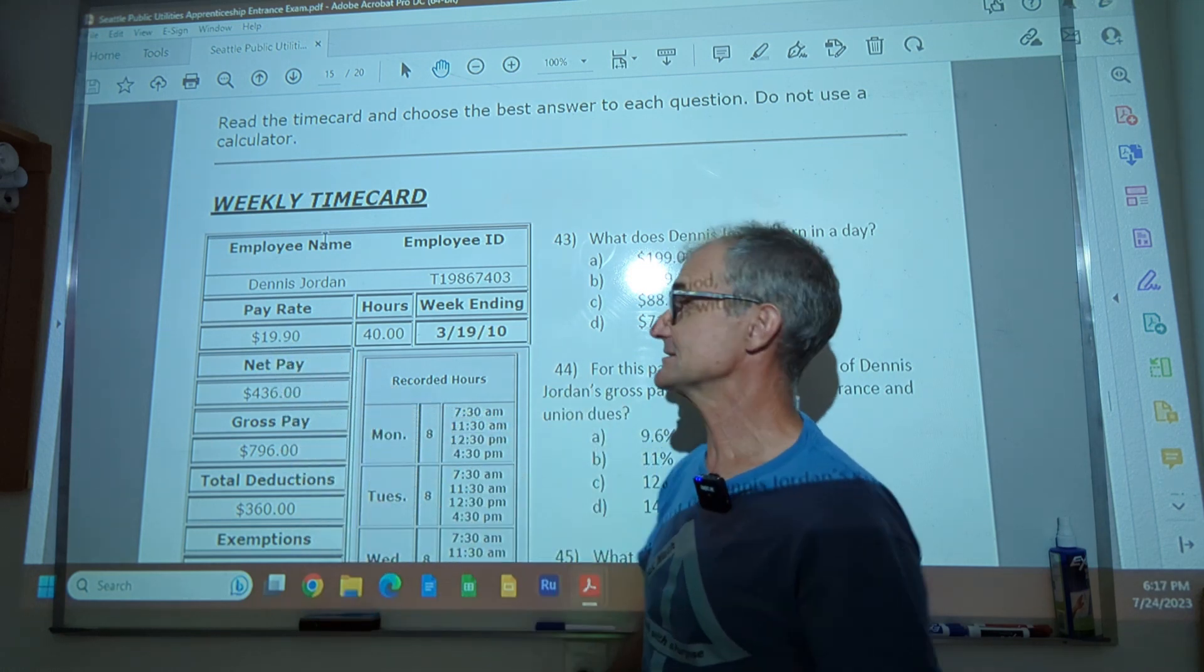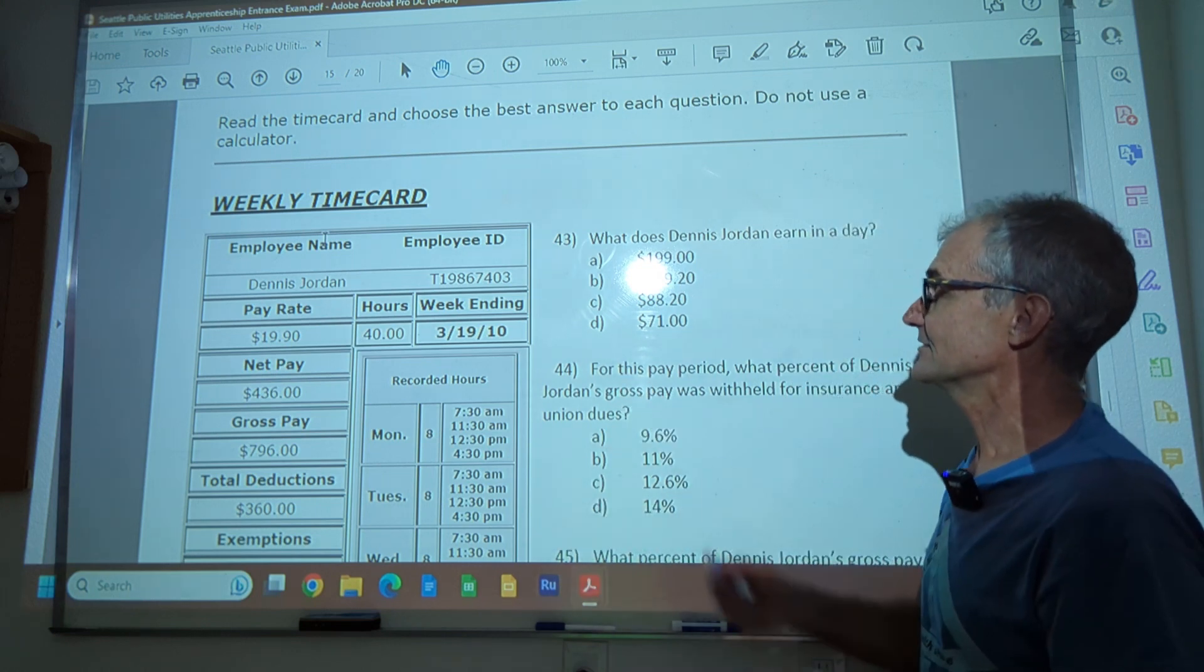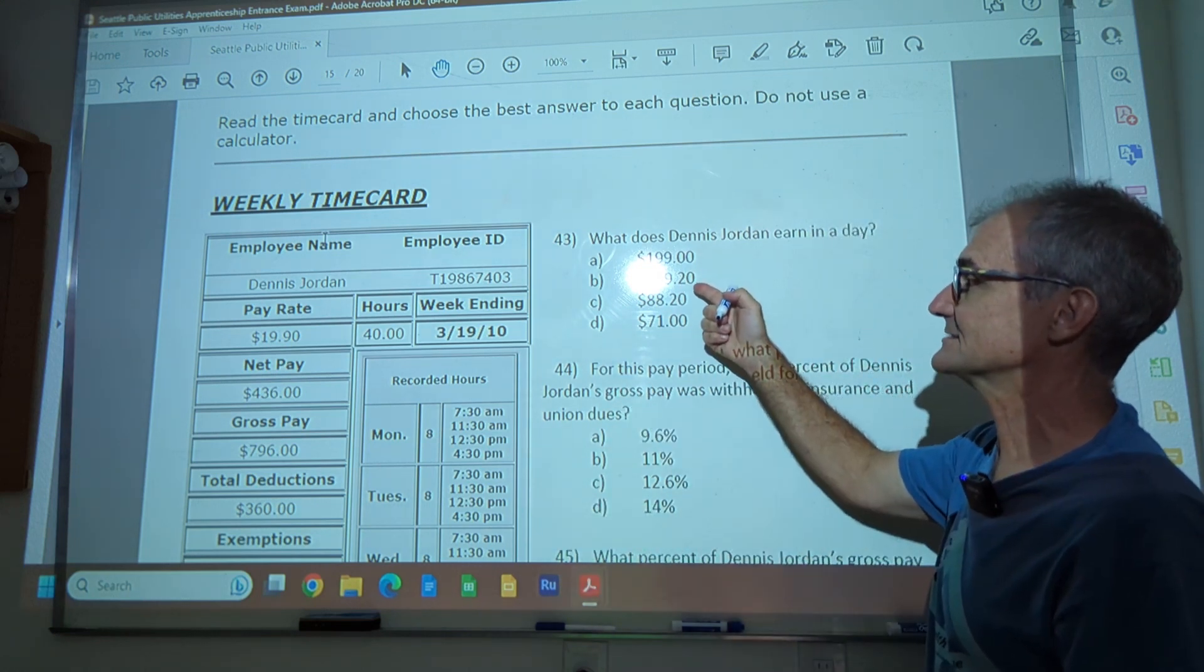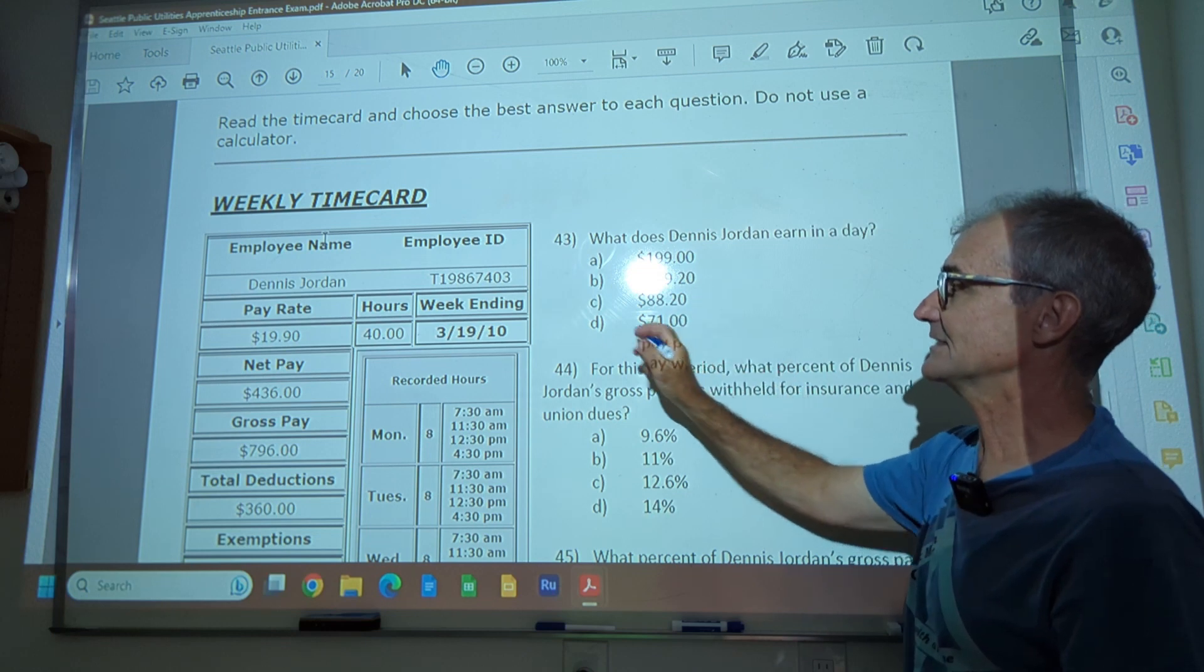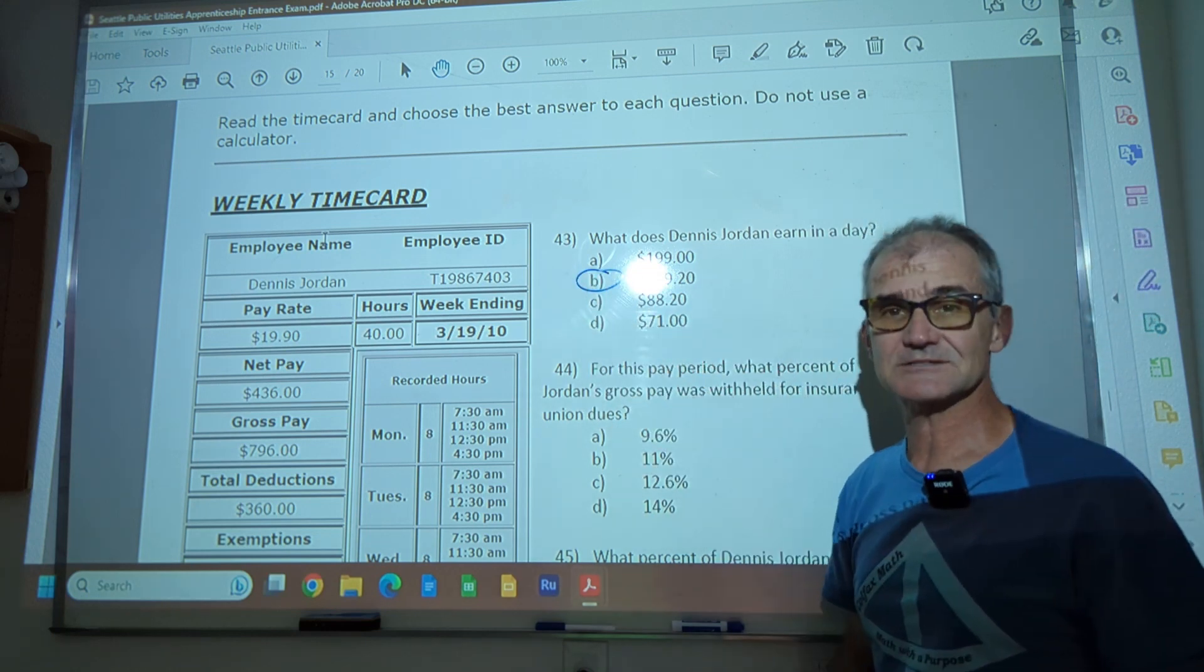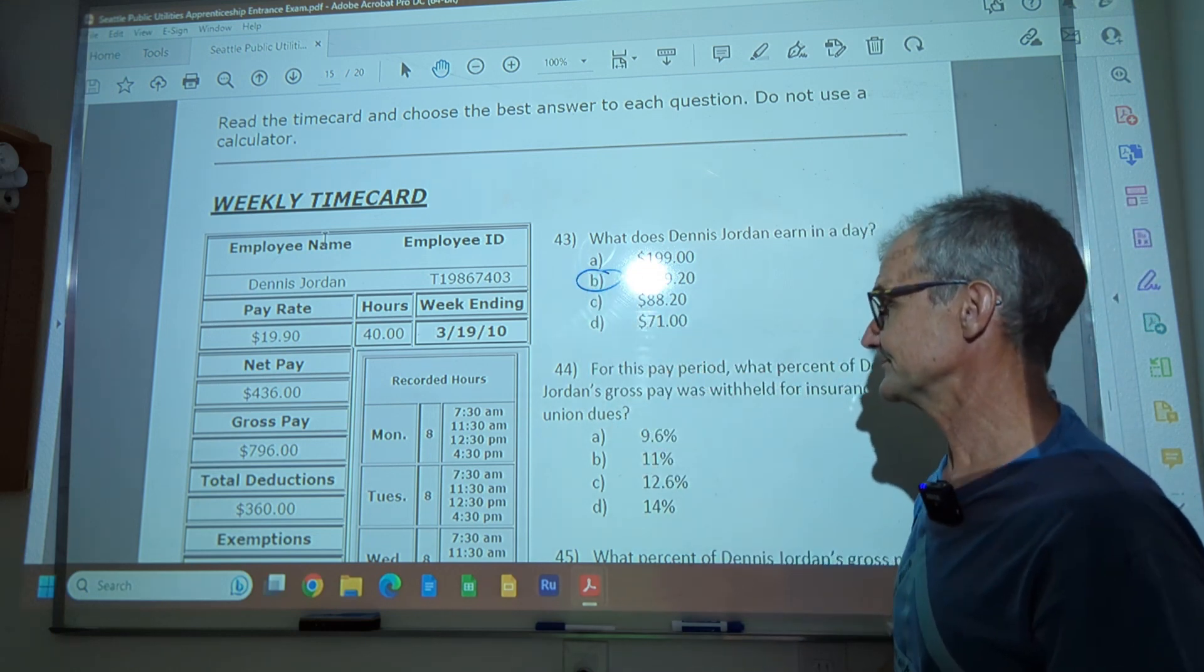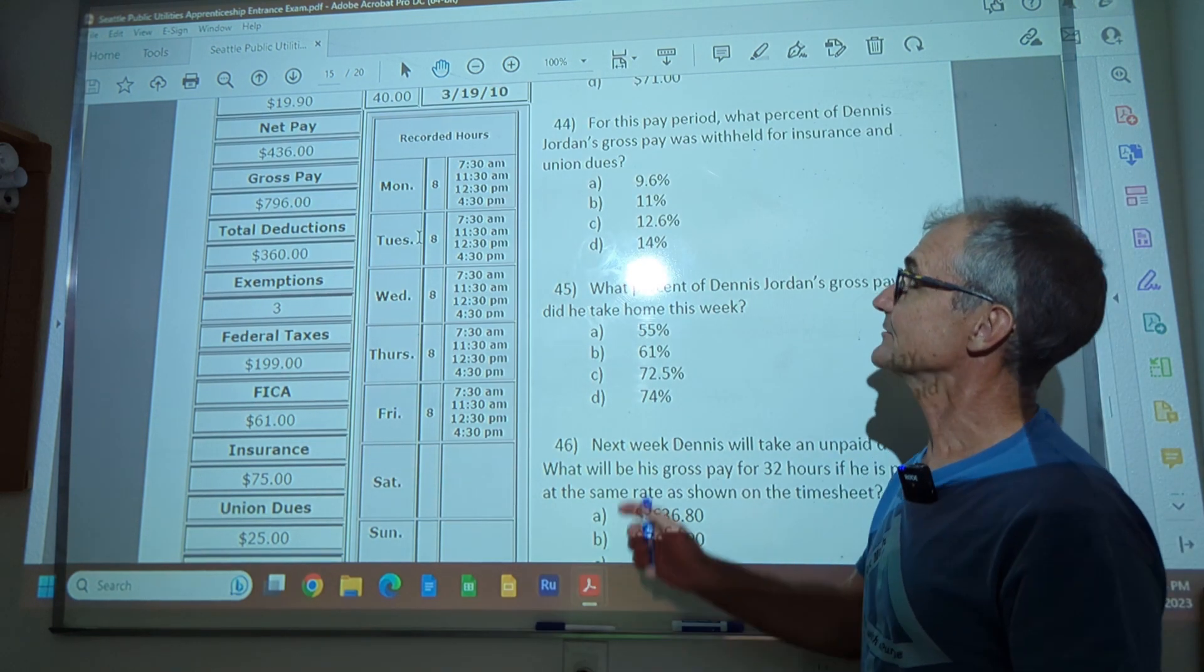Then I go to my answers. There's only one answer, a little bit less than 160, 159.20. There's my correct answer there. Answer B. Okay. Problem number 44.